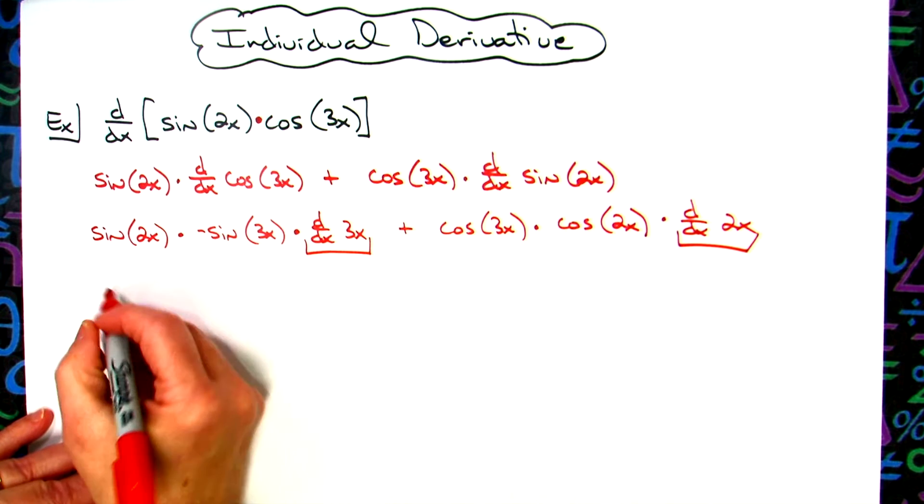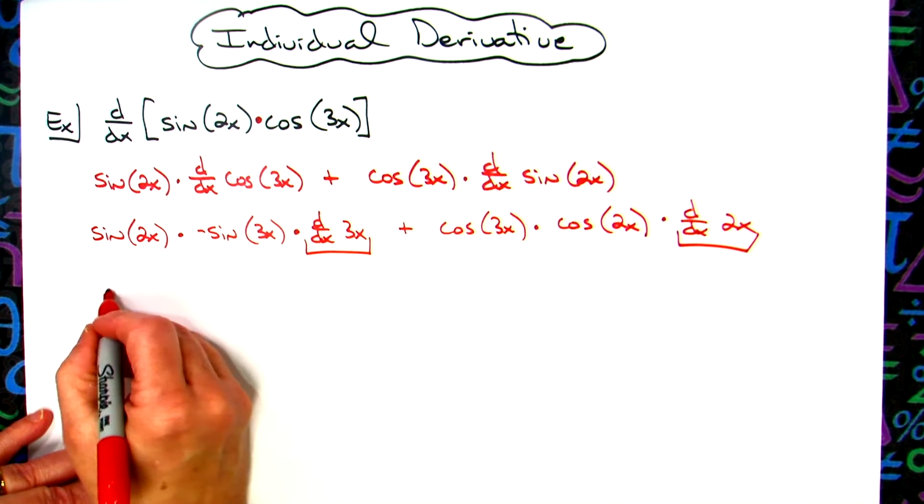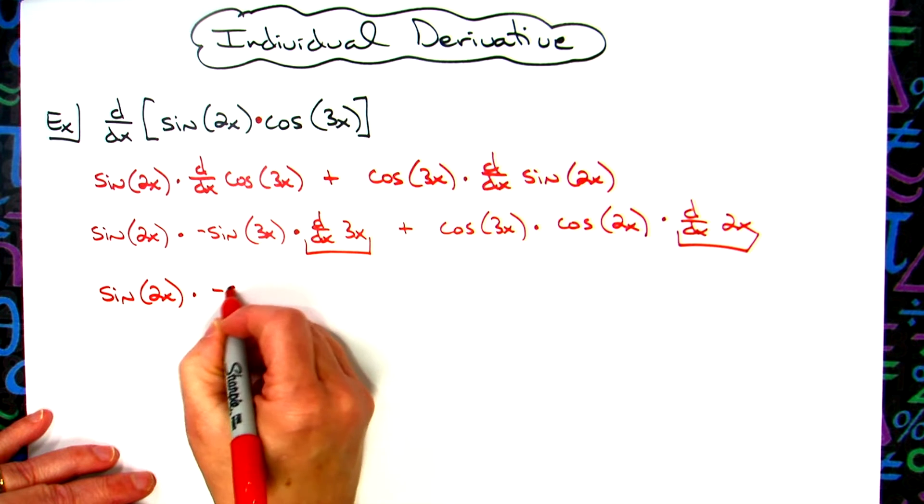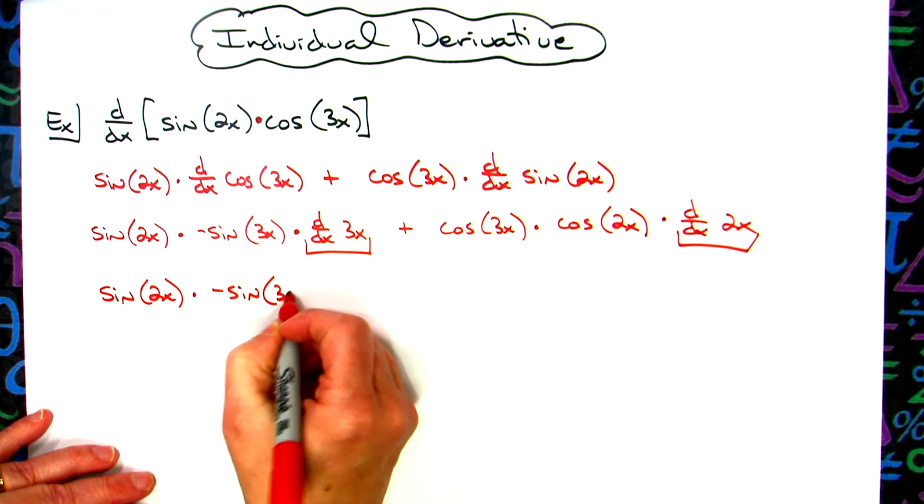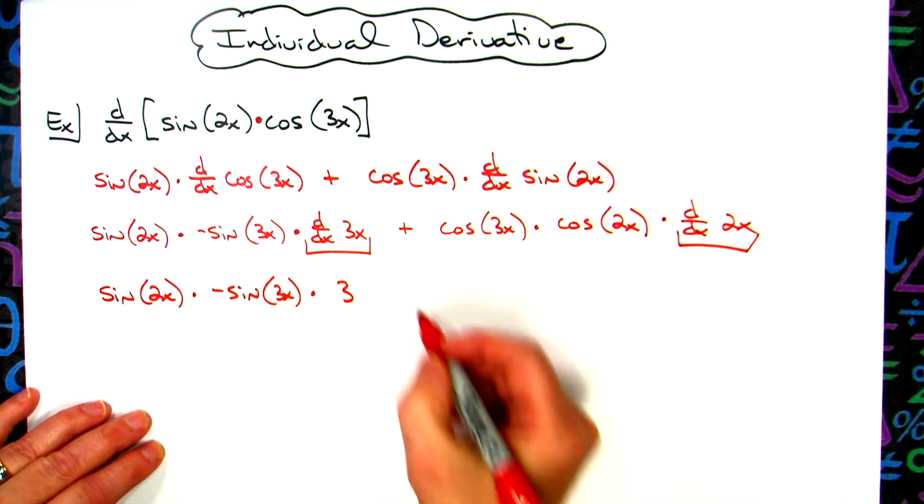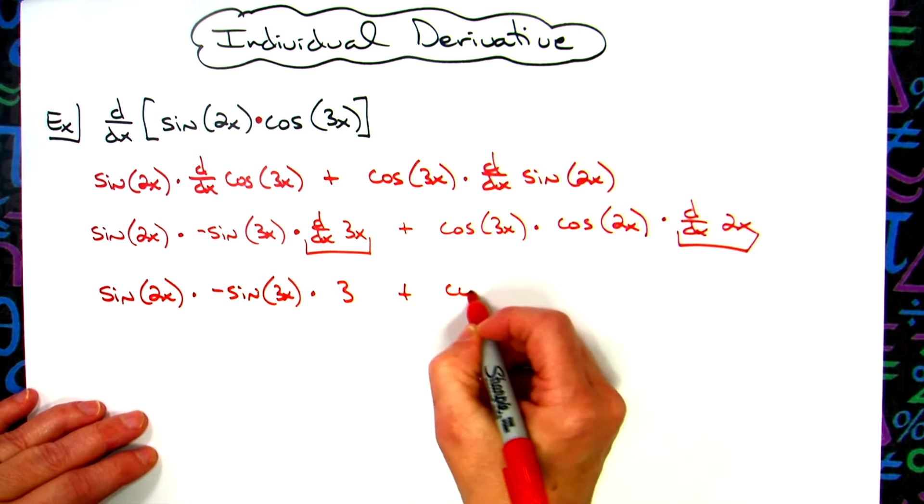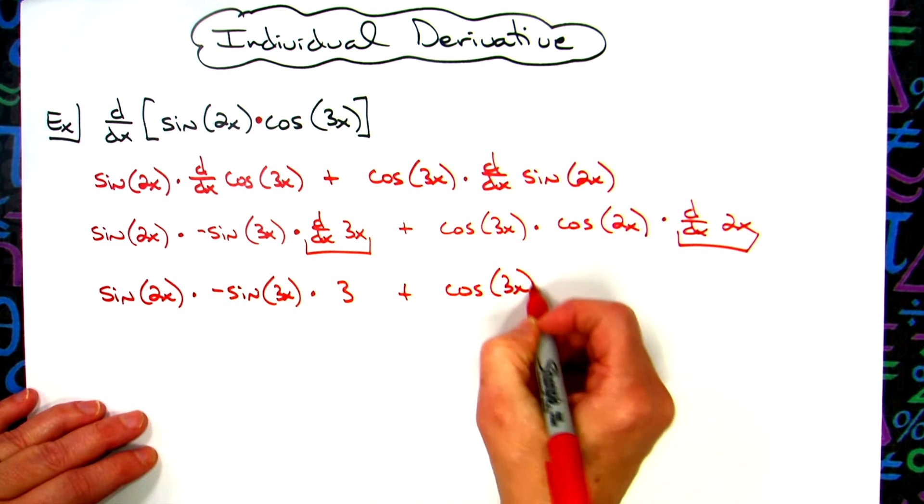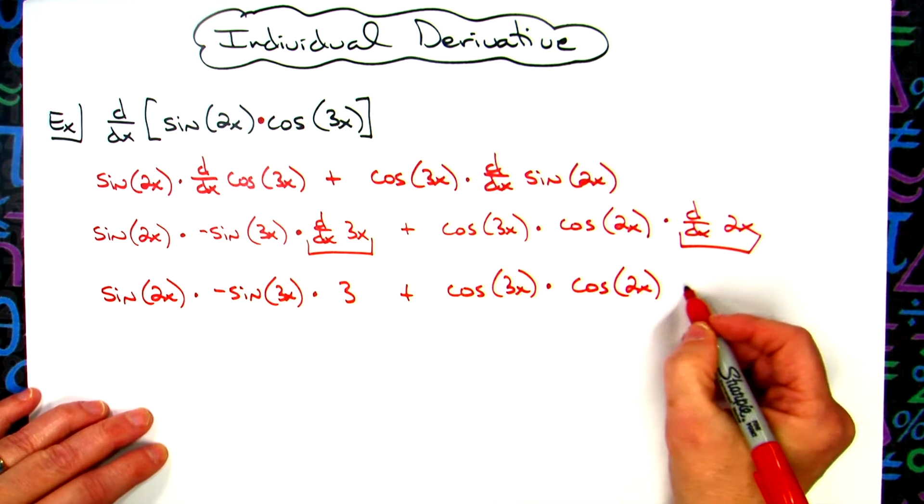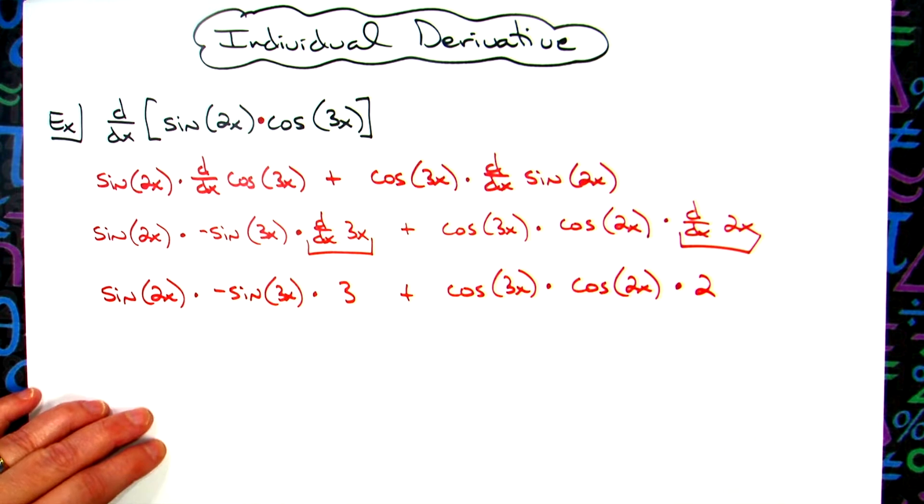All right, so on this last line here, the only thing I'm going to do is take those last two derivatives. So let's have a sine of 2x here times the negative sine of the 3x, and then times that derivative there which is just going to be a 3. We'll go ahead and have this here, cosine of a 3x times cosine of a 2x, and then taking the derivative right there we'll have the derivative times 2.